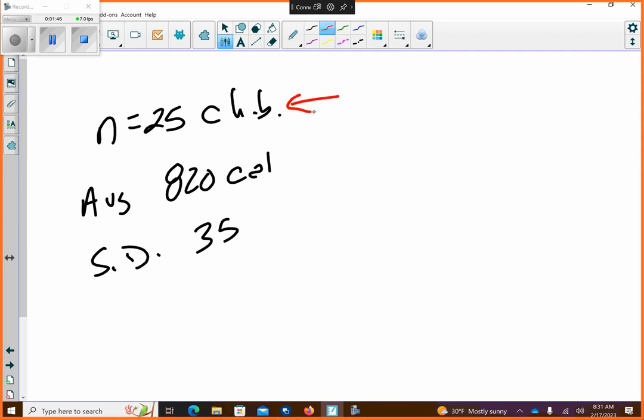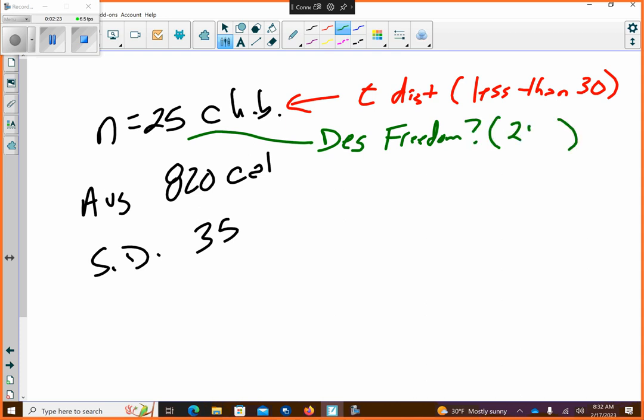Alright, so item number one. Which test do I use because I only have 25 cheeseburgers? Do I use a normal distribution or a T distribution? Yeah, I use a T distribution because I have less than 30. Alright, so if I'm using 25 cheeseburgers, what would my degrees of freedom be? 24, good. It's always one less. You good with that?